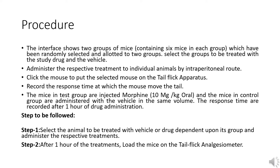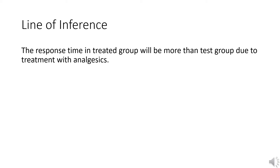Steps to be followed — Step 1: select the animal to be treated with vehicle or drug dependent upon its group and administer the respective treatments. Step 2: after one hour of the treatments, load the mice on the tail flick analgesiometer. Line of inference: the response time in the treated group will be more than the control group due to treatment with analgesics.